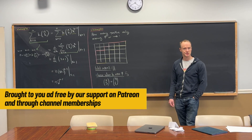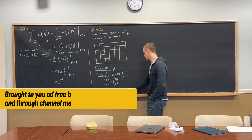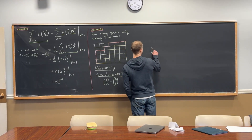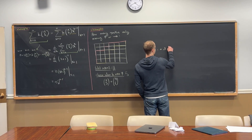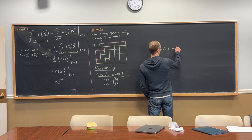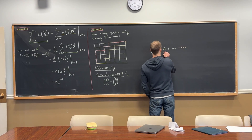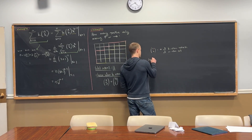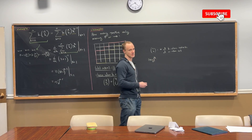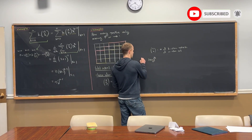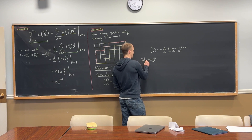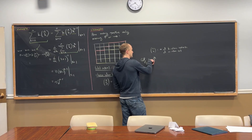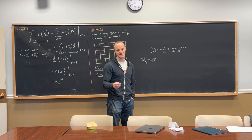They all satisfy the same recursion. If you define n choose k to be the number of k-element subsets of an n-element set, and then you look at x plus 1 to the n, and the coefficient of x to the k — it's essentially the same thing. You can generalize it by putting a y in there also.